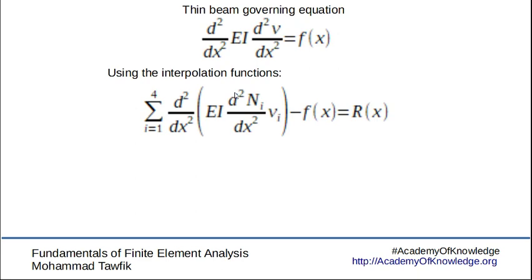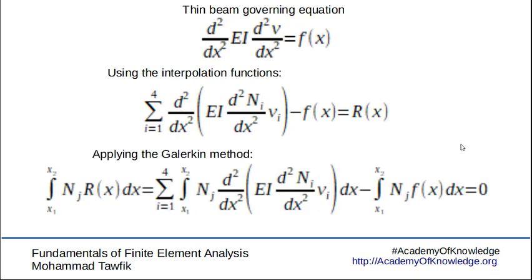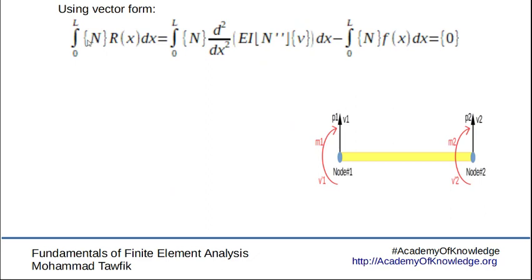Now when we substitute with the interpolation function, we get a residue because the differential equation cannot be balanced this way. So we use the Galerkin method on the residue to get this relation. It may look a bit confusing, but when we put it in terms of vectors, it becomes a little bit easier to understand.